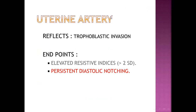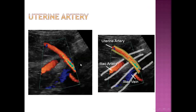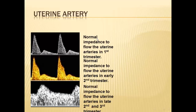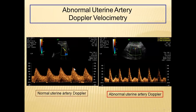The uterine artery is another section of Doppler which helps us predict preeclampsia. It reflects trophoblastic invasion, and the endpoint is elevated resistance indices more than two standard deviations, or a persistent diastolic notch. Normally in the first trimester there is high impedance in the uterine artery. In the second trimester there is a notch, but in the late second trimester and third trimester the notch normally disappears. If there is a persistent notch in the late second trimester, this is abnormal and predicts preeclampsia.